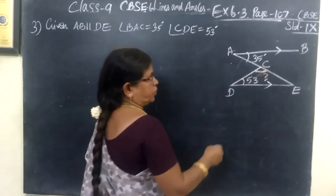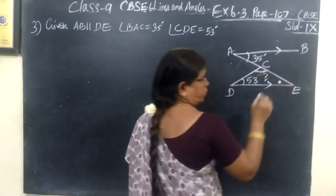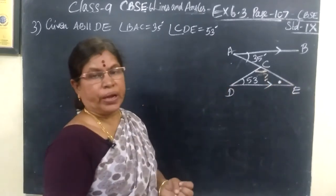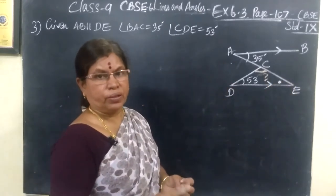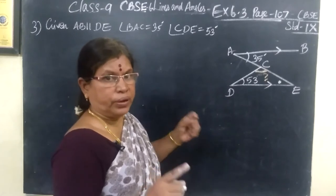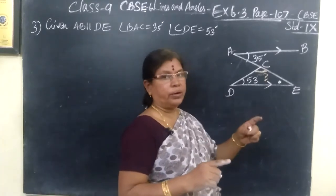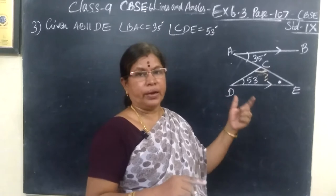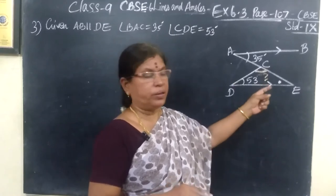For this, you must know this angle also. We know the property: the sum of the angles of a triangle is 180 degrees. Three angles we need—sorry, two angles we need. If you add them and subtract from 180 degrees, you get the third angle.